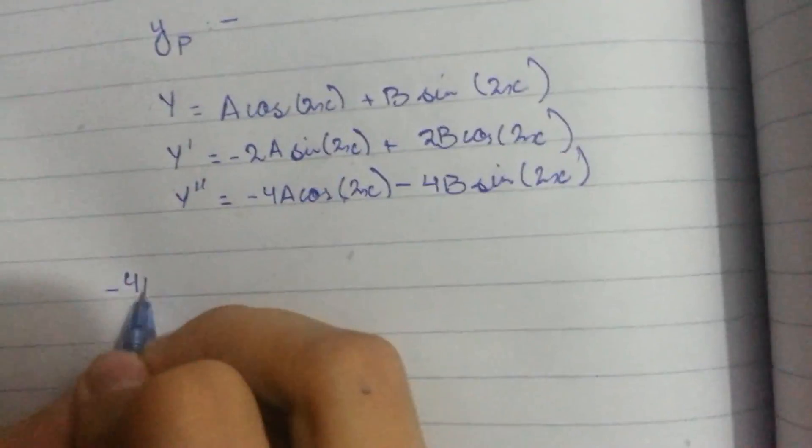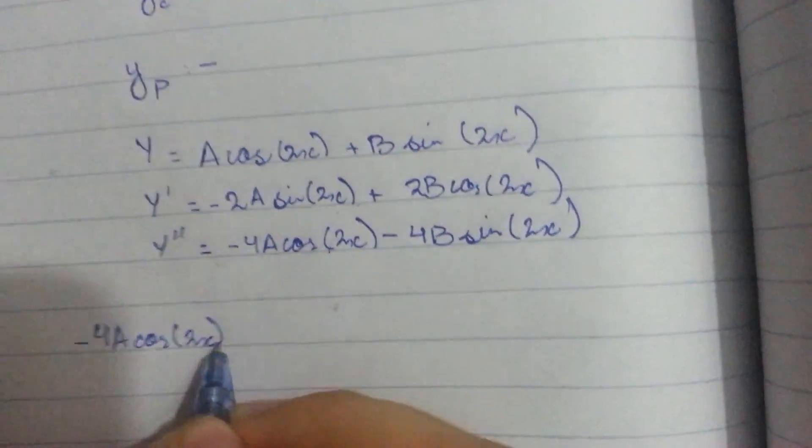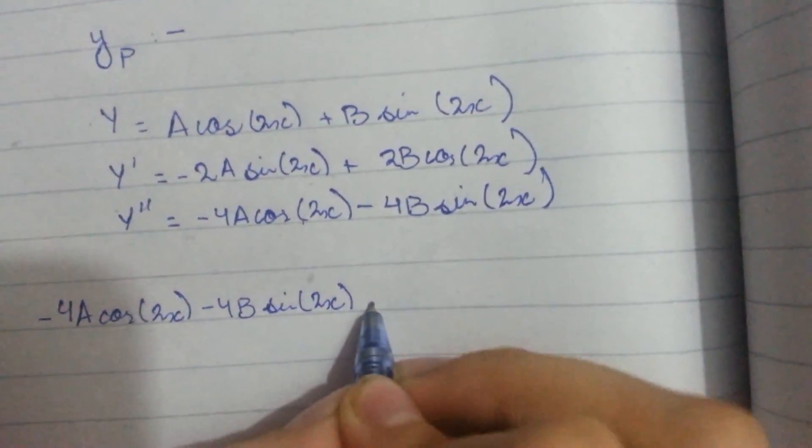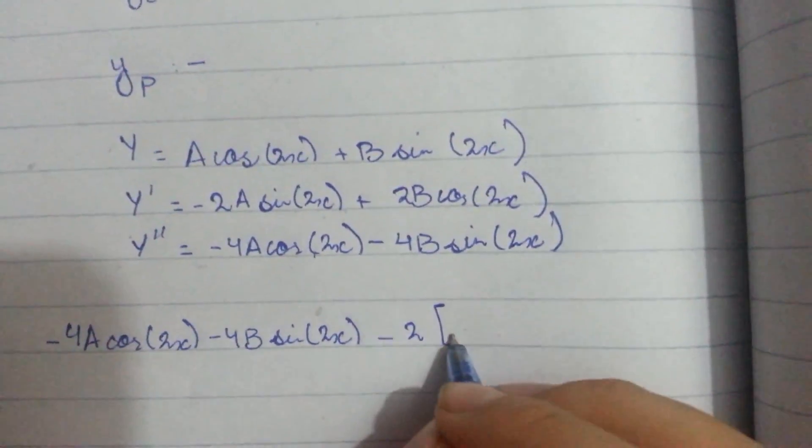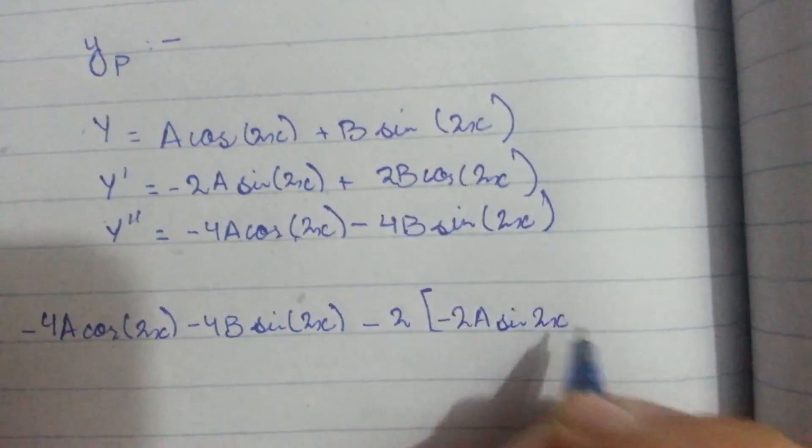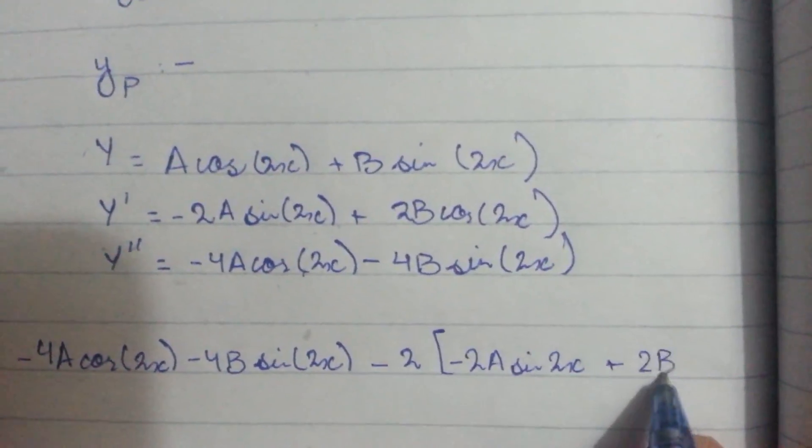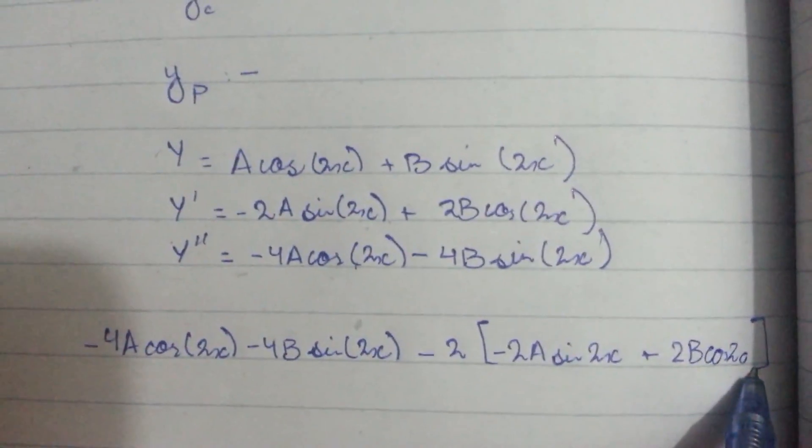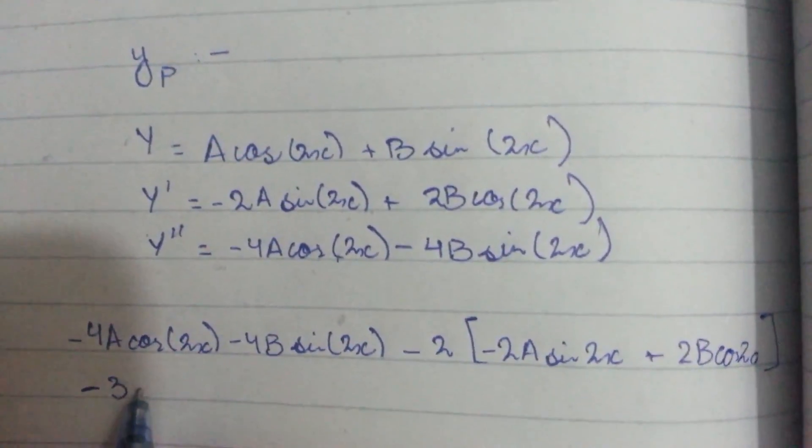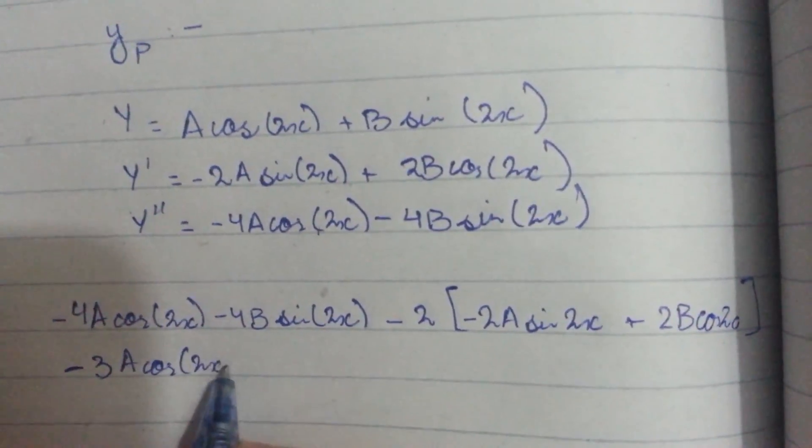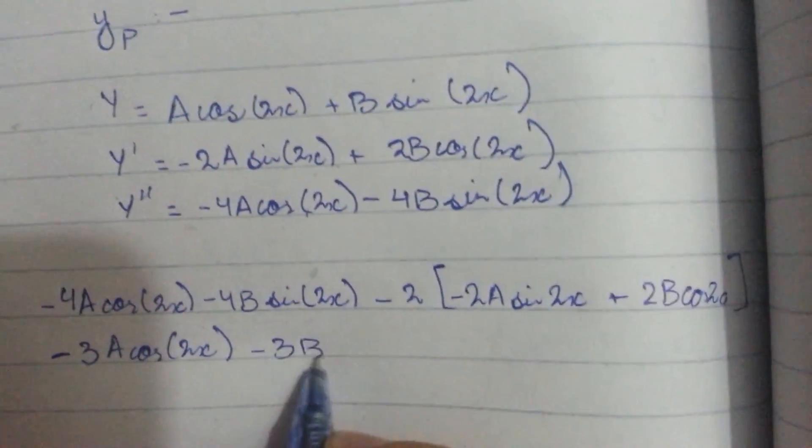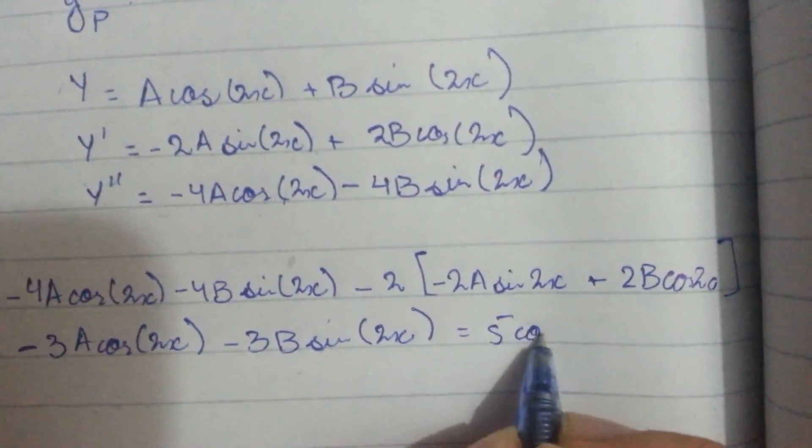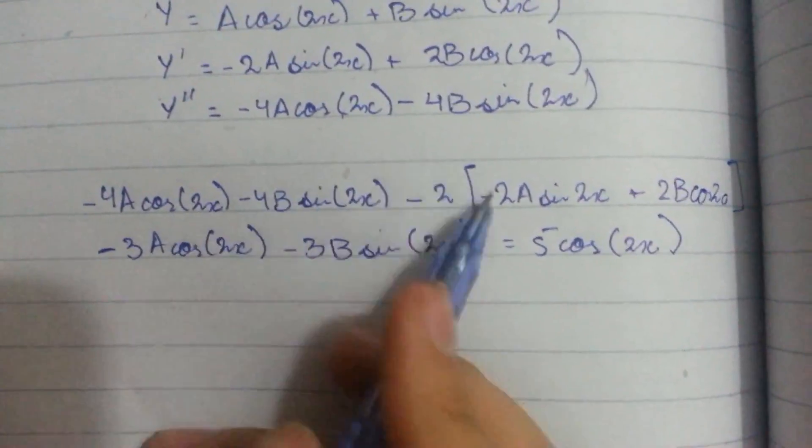So first we will put y double prime equals minus 4A cos 2x minus 4B sine 2x, plus y prime which is minus 2A sine 2x plus 2B cos 2x, minus 3y which is minus 3A cos 2x minus 3B sine 2x, equals 5 cos 2x. After simplifying this...